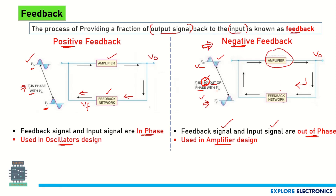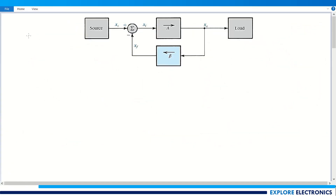Now let us look at the effect of negative feedback on the gain of an amplifier when we connect a feedback network. This is the general structure: we have a voltage source, the amplifier circuit, and an output x_naught which is given as input to the feedback network, producing output x_F. The input to the amplifier is x_i, obtained from the source voltage x_s minus x_F — the minus sign indicates negative feedback.